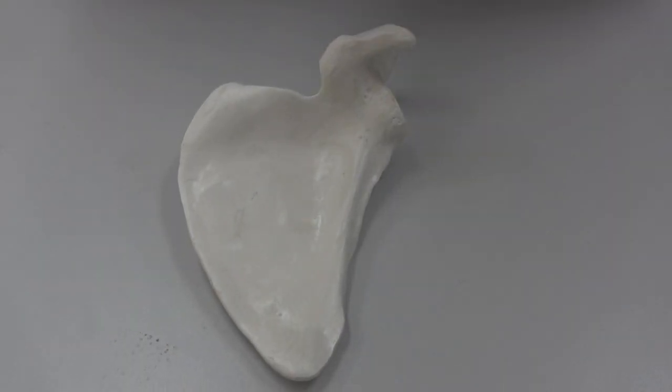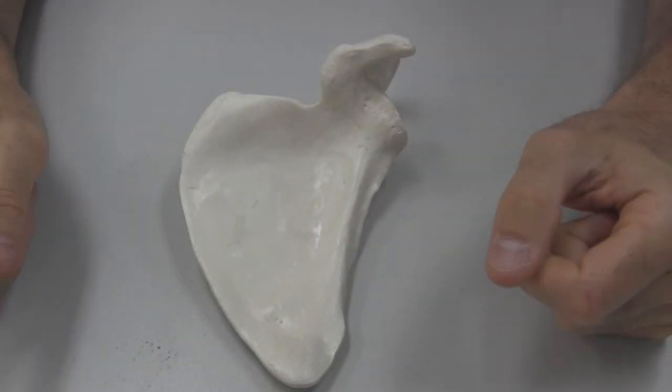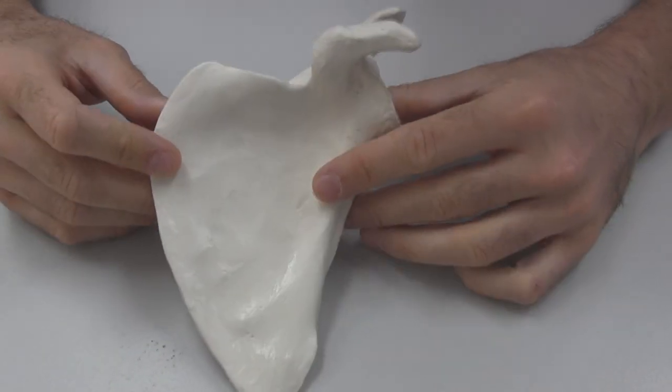We're looking at the specifics of the clavicle, scapula, and humerus, and we're going to start by going through some distinguishing features on the scapula.